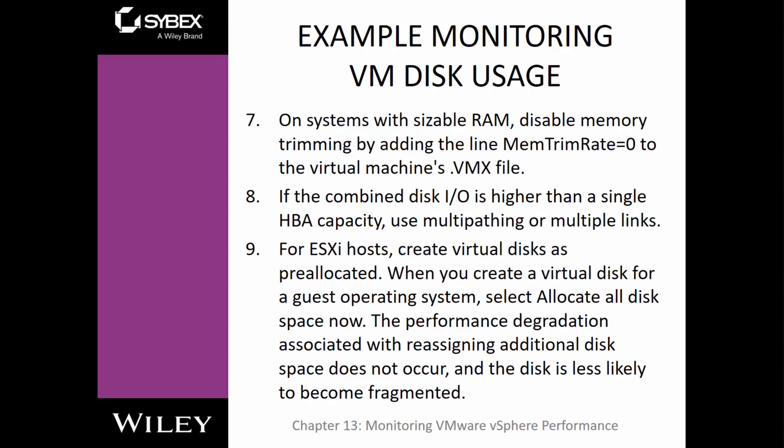On systems with sizable RAM, maybe disable RAM trimming. Look at combining disk I/O when there's higher than a single HBA capacity. Use multi-pathing or multi-links when using dedicated SANs — multiple paths means multiple ways to get to a data store for better I/O efficiencies. Pre-allocating virtual disks on ESXi hosts saves CPU cycles long-term. That's the end of this chapter — there is so much in troubleshooting, but a big part is looking at the four critical resources: processor, memory, network, and data stores.